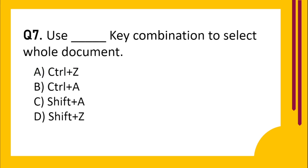Question number 7. Use dash key combination to select the whole document. Option A: Ctrl plus Z. Option B: Ctrl plus A. Option C: Shift plus A. Option D: Shift plus Z. The correct answer is Option B: Ctrl plus A.